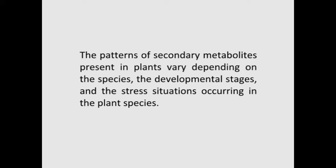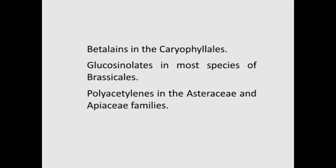Next is the occurrence and compartmentation of secondary metabolites. The patterns of secondary metabolites present in plants vary depending on the species, the developmental stages and the stress situations. These differences are due to differences in metabolite biosynthesis, regulation of genes encoding the biosynthetic enzymes, and differences in transcription factors and transport proteins present in plants influenced by genotype and stress conditions. Therefore, it is difficult to generalize patterns of secondary metabolites for a given plant species, although some metabolites can be confined to certain plant species like the betalains in Caryophyllales, glucosinolates in most species of Brassicales, and polyacetylenes in the Asteraceae and Apiaceae families.